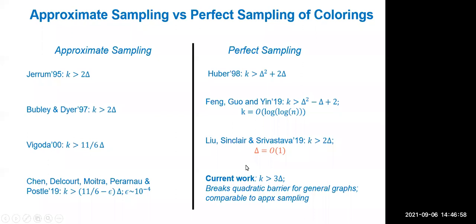A question about the difference between Jerrum's work and Bubley-Dyer: Jerrum showed the result using a coupling argument where you start with two distributions — one a point distribution on a single state, the other starting from the stationary distribution. You couple the evolution of both chains by running them with the same randomness: updating the same vertex and supplying a uniformly random permutation on the set of all colors to both chains.